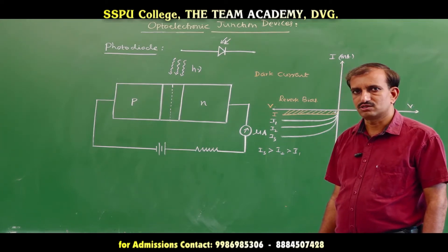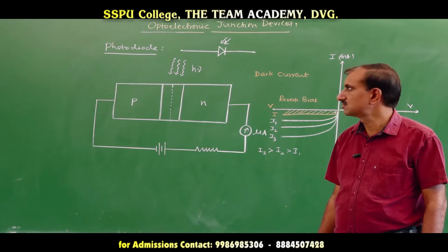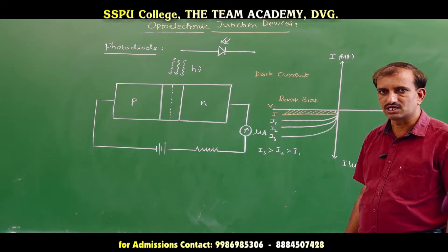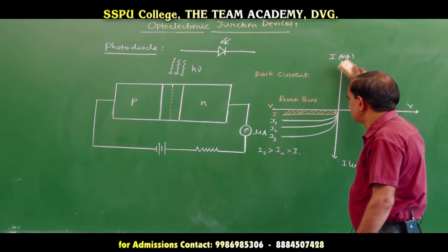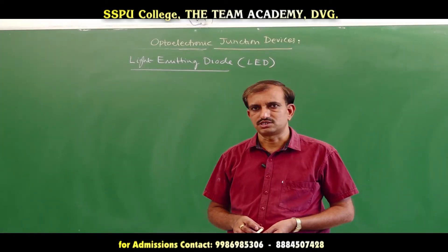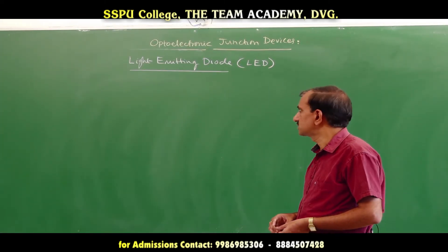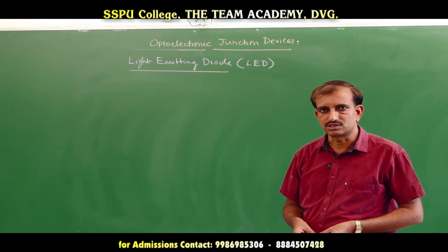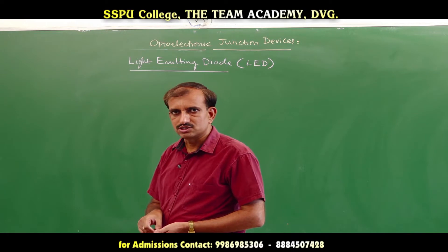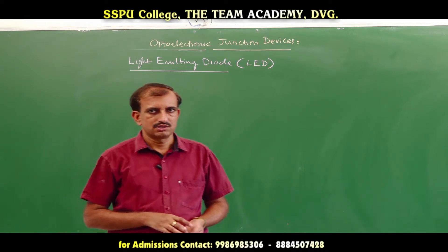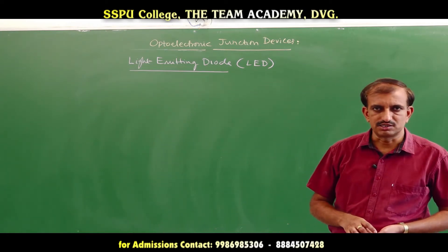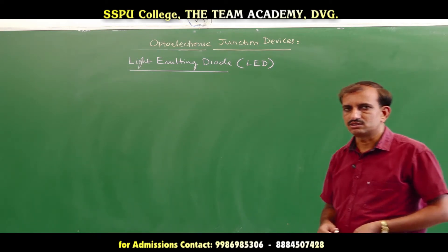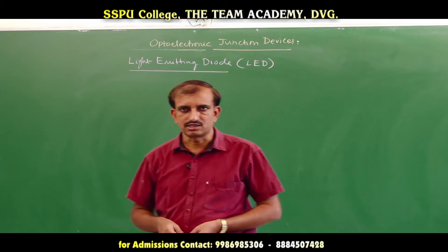Let us now study one more optoelectronic device known as LED — the light emitting diode. This light emitting diode converts electric energy into light energy, whereas the photodiode converts light energy into electric energy. The photodiode works under reverse bias, whereas the light emitting diode works under forward bias.